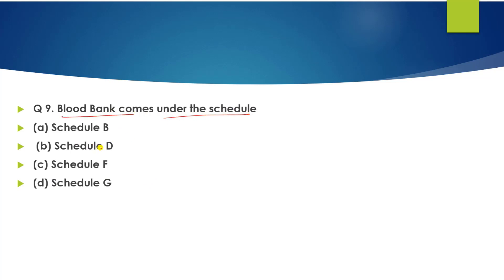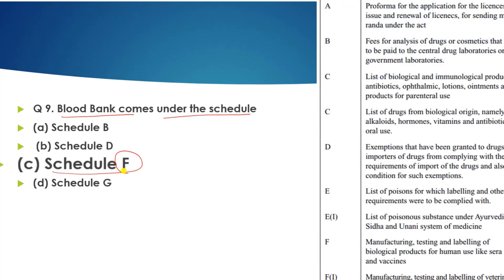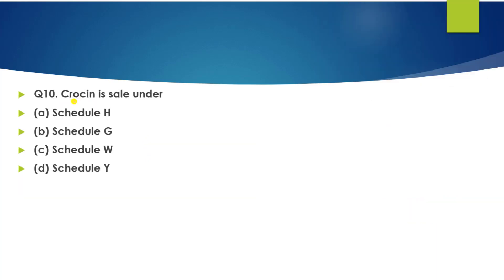Question number 9: Blood bank comes under which schedule? Which schedule covers manufacturing, testing, and labeling of biological products?